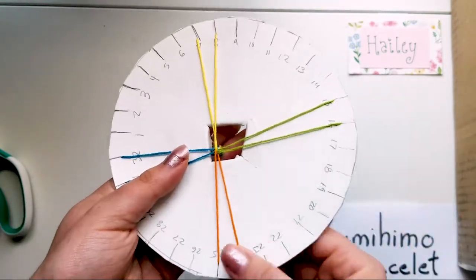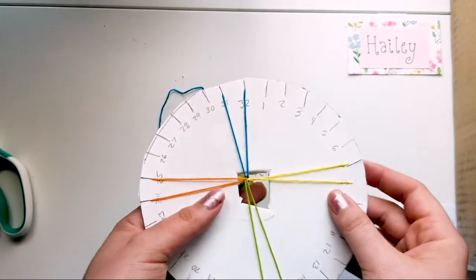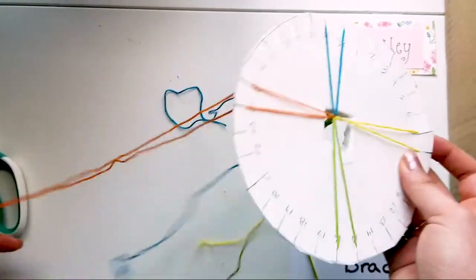So people do hearts, and they do stripes, and they do ridged spirals. And I don't know, I just find it really interesting.